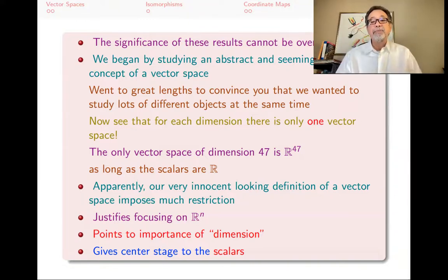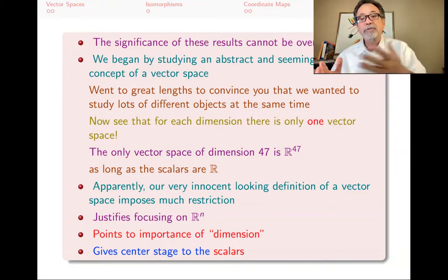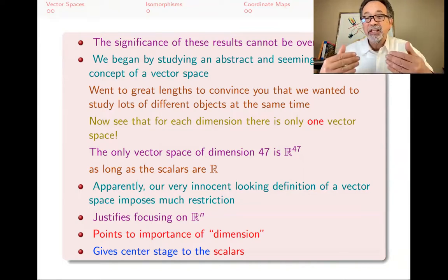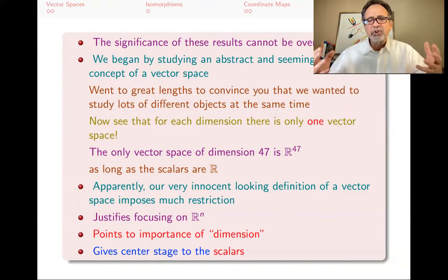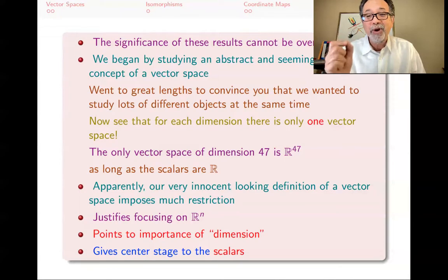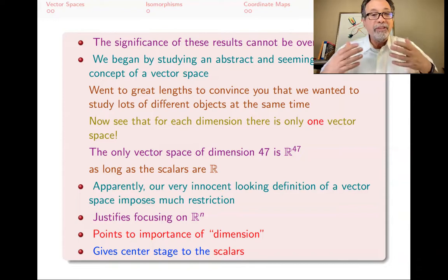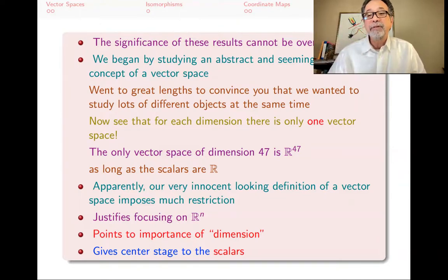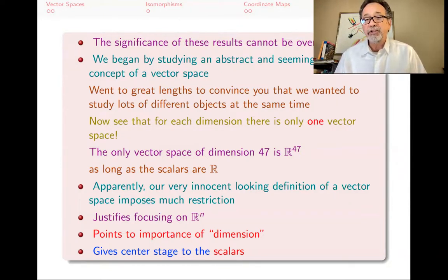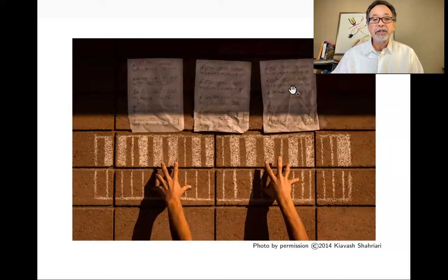This lecture brings to an end one part of the story: we started with vector spaces and this very abstract notion, and it got us to the point where we now know that for every dimension there's only one vector space, as long as we know the scalars. As we go along, we will use this fact — that we can translate things to Rn. Our next simplifying task is to realize that all linear transformations between finite dimensional vector spaces are really matrices. This is the end of this lecture; I will see you in the next one.